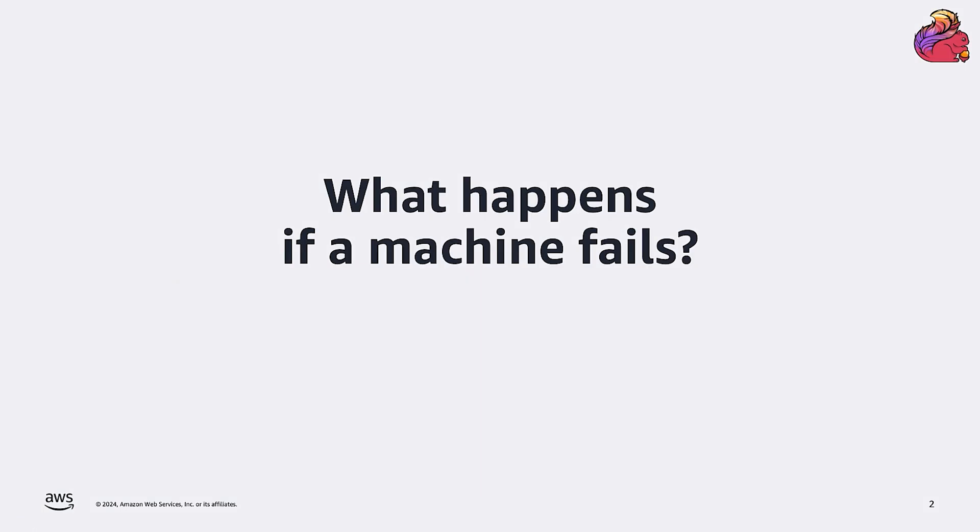In the previous video, we have seen how the logical graph of the application is resolved into the physical graph that actually does the parallel processing of the data. But what happens if something goes wrong, if the application crashes or if a hardware component fails?